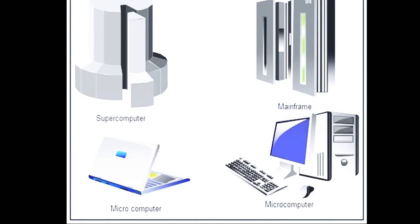The third type is personal computers, also known as microcomputers. They are used in homes, offices, and schools. They cost less than many other computers and only one person can use a PC at a time. PCs are used to create and store documents, maintain accounts, keep records of data like names, addresses, and phone numbers of friends and relatives, play games, and listen to music. A laptop computer is also a type of personal computer.